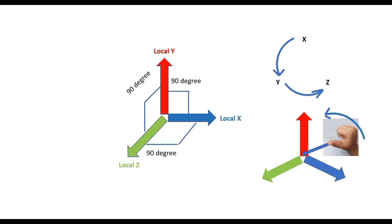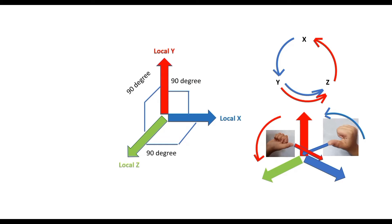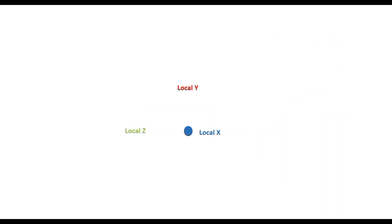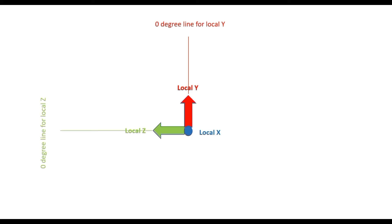The cross product of local y to local z gives the local x vector — curling the fingers from local y to local z, the thumb points toward local x. And the cross product from local z to local x gives local y — curling the fingers from local z to local x, the thumb points toward local y. So if we look at the local axis system from the positive direction of local x, local y along the vertical zero-degree line and local z along the horizontal zero-degree line satisfies mutual perpendicularity and the right-hand thumb rule.